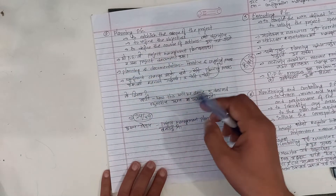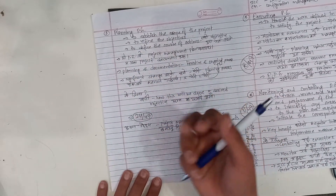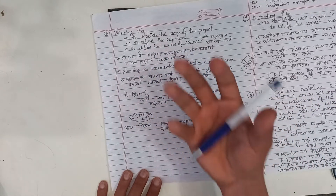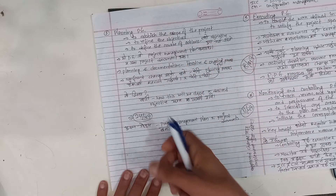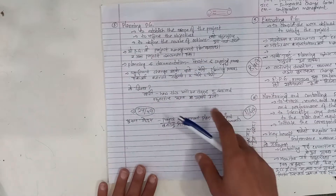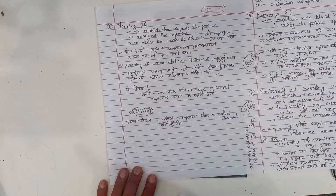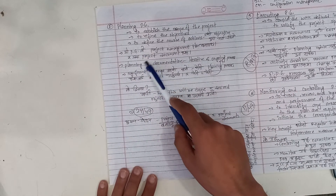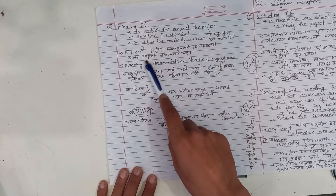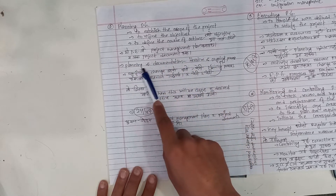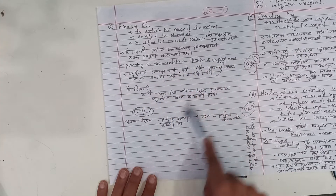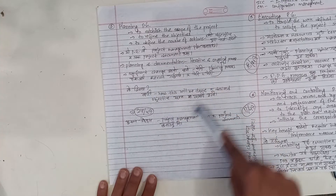In planning, we need to establish the scope of the project and refine the objectives. We define the course of action required to attain the objectives. This process group is used to create the project management plan and project documents. Planning and documentation is an iterative and ongoing process.